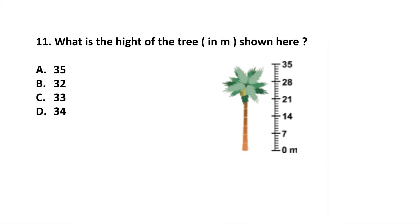Question number 11. What is the height of the tree in meters shown here? The height of the tree is 34 cm. Answer is option B.